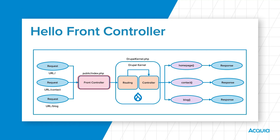Another bonus of utilizing a front controller is that by using rewrite rules in the web server configuration, the index.php is not needed to show in the request, resulting in beautiful, clean URLs. This means the client can just go to your domain slash, or your domain slash contact, or your domain slash blog, and Drupal handles clean URLs automatically.